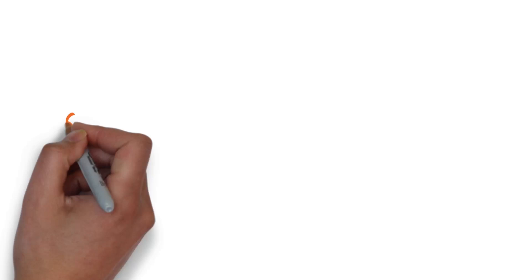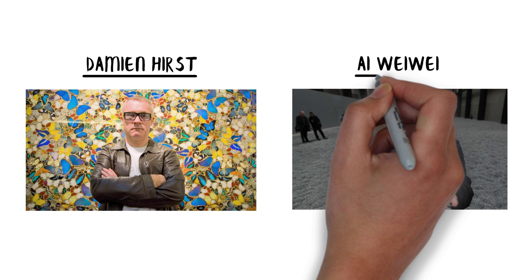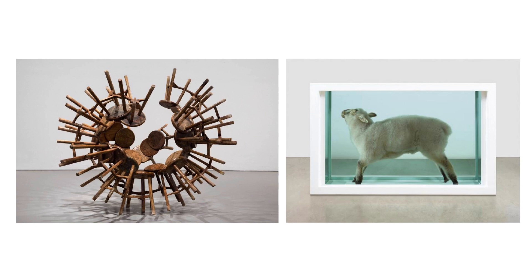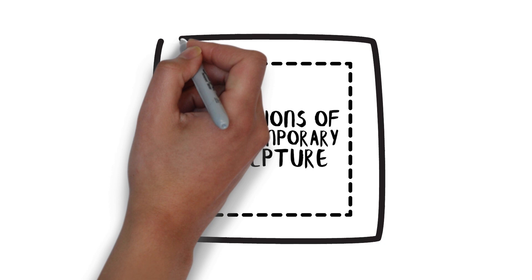Contemporary sculpture utilizes a wide range of materials and techniques, reflecting the artist's conceptual intent. Sculptors like Damien Hirst and Ai Weiwei employ unconventional materials, including found objects, industrial materials, and even organic matter. The functions of contemporary sculpture have also expanded beyond traditional notions of monumentality, with site-specific installations and interactive artworks becoming more prevalent.